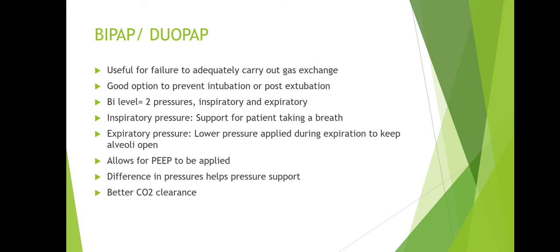BiPAP and DuoPAP are useful for failure to adequately carry out gas exchange. They're good to prevent intubation or post-extubation before stepping down to high flow or vapour-FIRM. These are bi-level — two pressures — with pressure on both the inspiratory and expiratory phases. The inspiratory pressure supports the baby with taking a breath, while the lower expiratory pressure keeps the alveoli open, leaving a little pressure and air in the lungs so they don't collapse completely. This allows PEEP to be applied and is really effective for CO2 clearance.